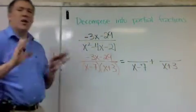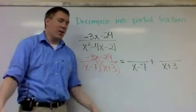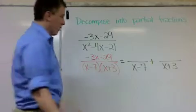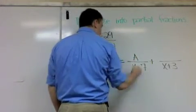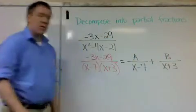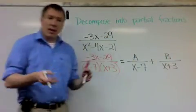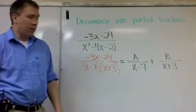Now, I have no idea what's going to go on the top. There's no way to guess at what's going to be on the top to make this work. So I'm simply going to write A and B. And A and B are just going to be numbers, and we're going to find out what they're going to be.